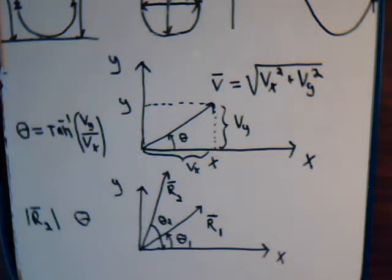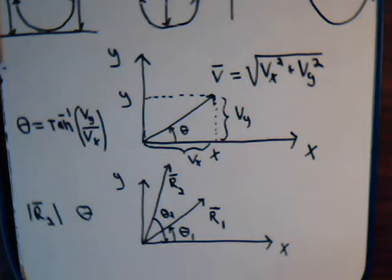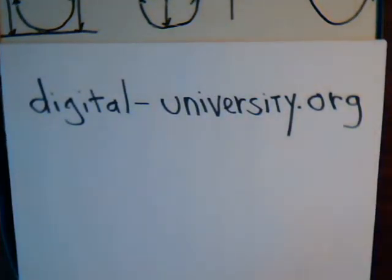We use rectangular and polar coordinates as our tools for solving problems using phasor analysis techniques. In the next videos we'll work several examples, and then once we do that we can talk more about impedance, reactance, and alternating circuits. This is video number 69 in our electrical circuit analysis series. The playlist for all the videos is at digital-university.org.